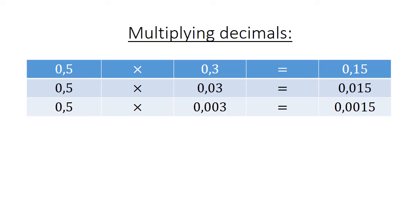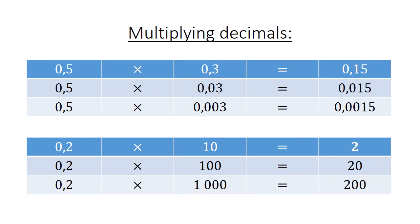Multiplying decimals. 0.5 times 0.3 equals 0.15. Now note the decimals are becoming more. 0.5 times 0.03 equals 0.015. Again we have 0.5, but now we multiply it by 0.003 equals 0.0015. If you look at the first one, 0.5 there was one digit. The second one, 0.3, another digit. If you look at your answer, there were two digits. The next example, 0.2 times 10 equals 2. 0.2 times 100 equals 20. 0.2 times 1000 equals 200.